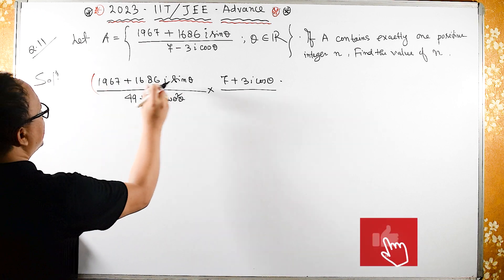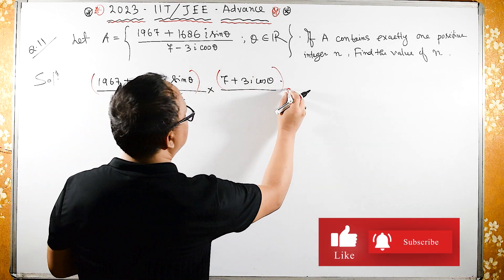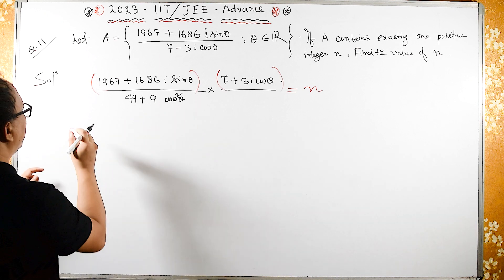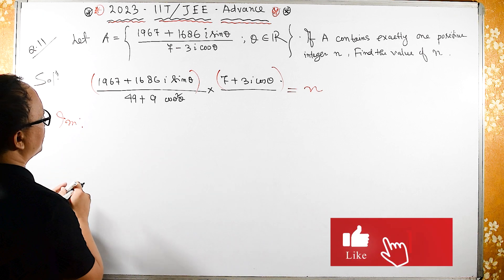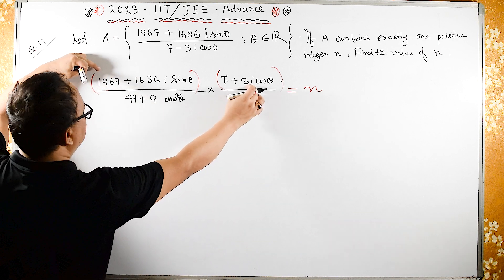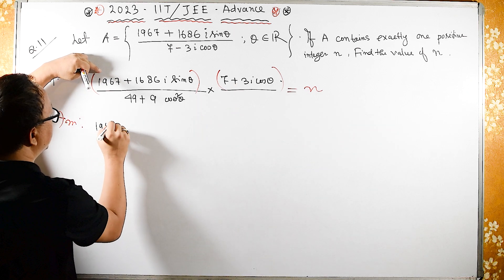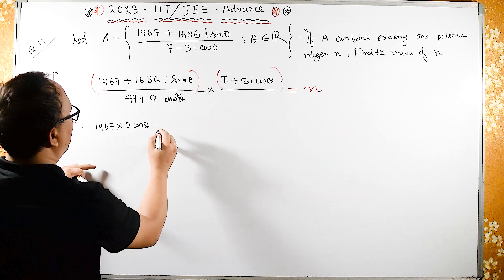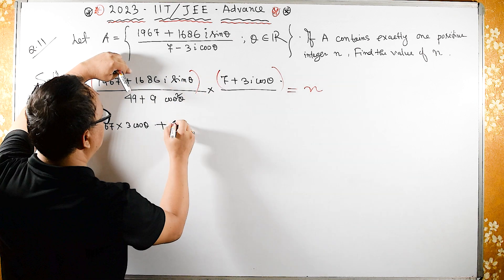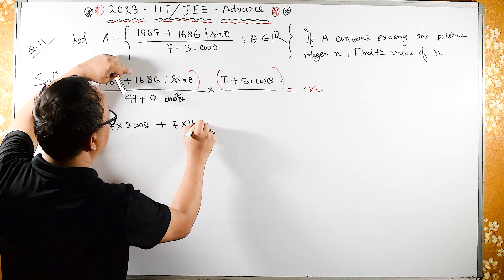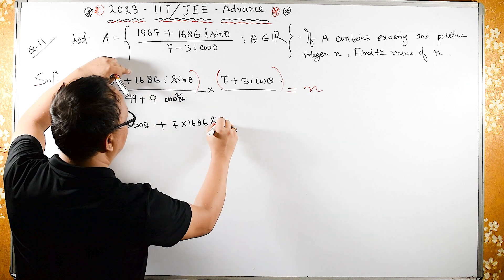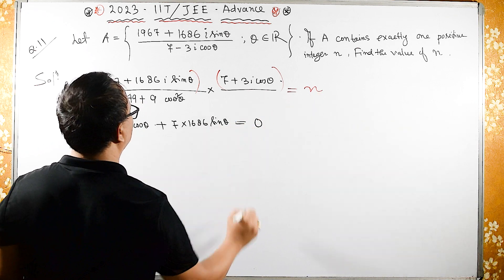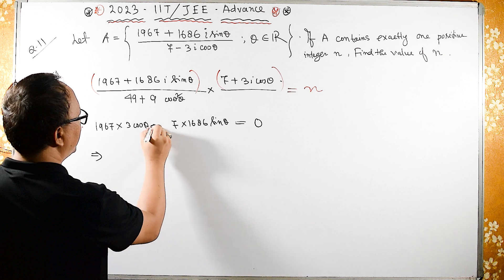Now let us say this equals n and compare the real part and imaginary parts. For the imaginary part, we have 1967 into 3 cos theta plus 7 into 1686 sin theta. For the imaginary part to equal zero, I will move terms to opposite sides: this equals minus this.